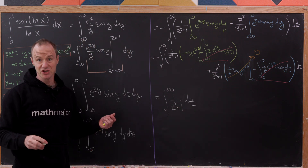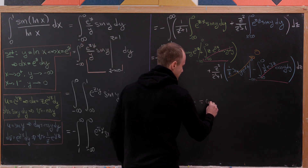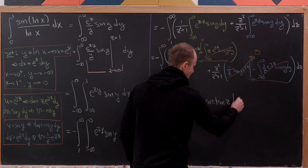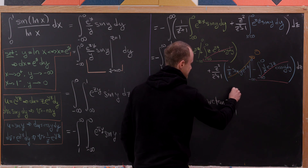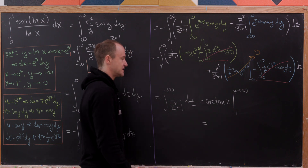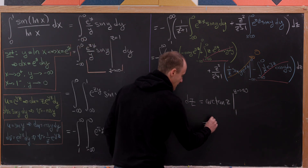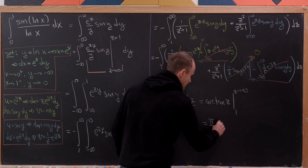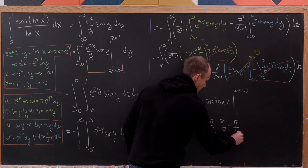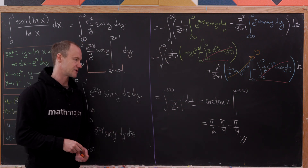This final integral is straightforward — the antiderivative is the inverse tangent of z, evaluated from 1 to infinity. As z approaches infinity, arctan approaches pi over 2, and arctan of 1 is pi over 4. So the answer is pi over 2 minus pi over 4, which equals pi over 4.